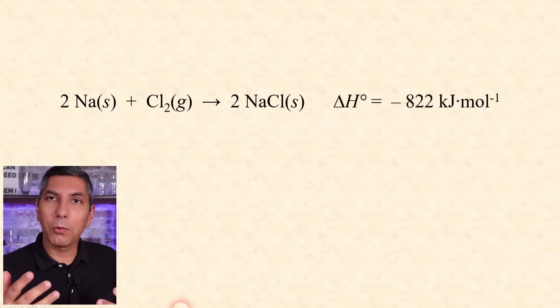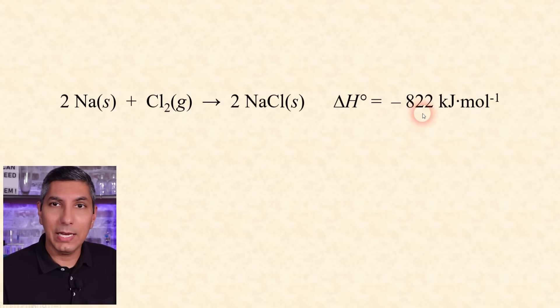Now if we double the recipe and react four moles of sodium with two moles of chlorine, we'll get twice the heat, 1644 kilojoules. So we can use these values in reaction stoichiometry.